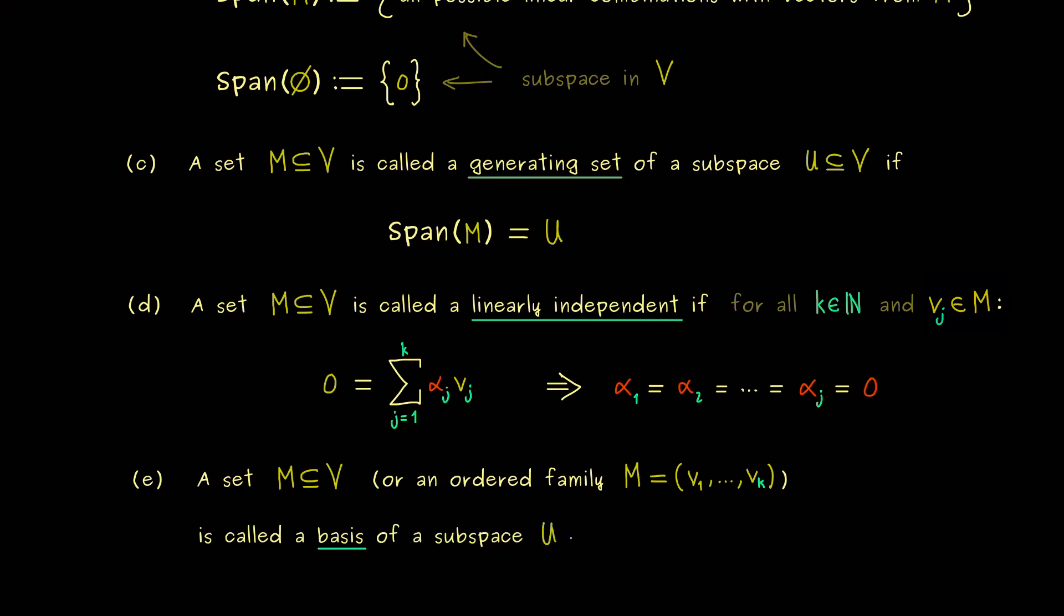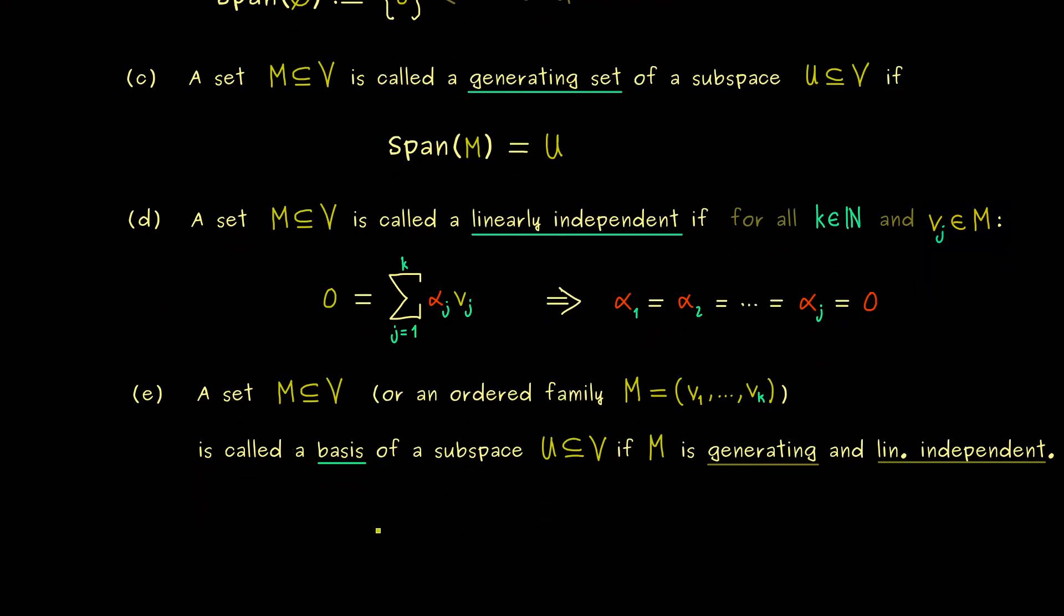More precisely here M should be the basis of a given subspace U in V. And now you see, the definition is very short, we just need the two ingredients, the set should be generating and also linearly independent. So first, generating means we describe U with less information and linearly independent means we don't use too much information. Therefore a basis for a subspace is the optimal way to describe this subspace.